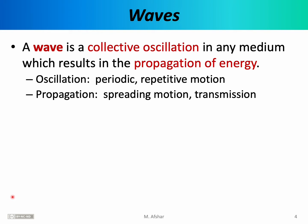We begin now with a very general definition of waves. A wave is a collective oscillation in any medium which results in the propagation of energy. Notice that this general definition has two parts. In order to have a wave, one needs oscillations — periodic, repetitive motion of some atoms or molecules in a medium. We also need propagation, which refers to the spreading motion or transmission of energy. So in order to have a wave, we need oscillations, and those oscillations must result in the traveling or spreading or transmission of some type of energy.